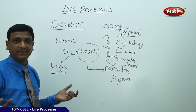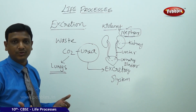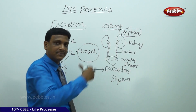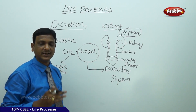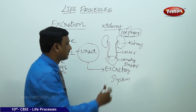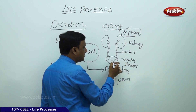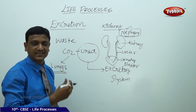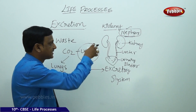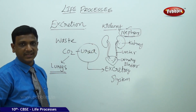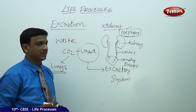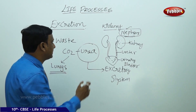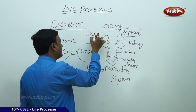Otherwise, we would go to the toilet many times and excrete large volumes of urine, losing water from the body. Whatever water is absorbed by the kidneys is reabsorbed — only the waste with a little amount of water is concentrated into urine. The concentrated urine passes through the ureter and reaches the urinary bladder. Once the urinary bladder is full, we get the sensation of going to the toilet and excrete urine out. Kidneys filter the blood to remove toxic nitrogenous waste like urea, uric acid, and other salts.